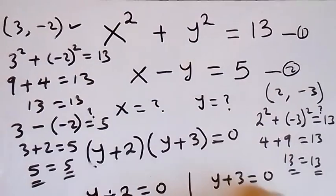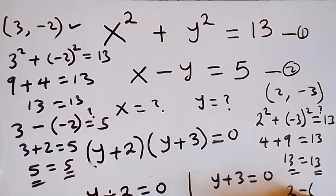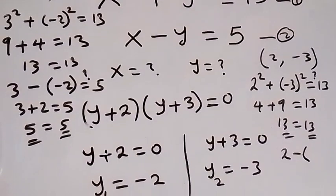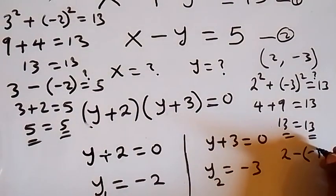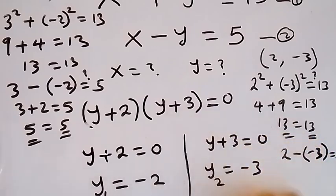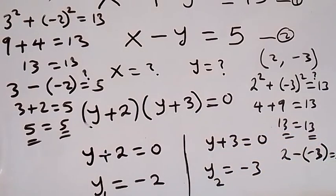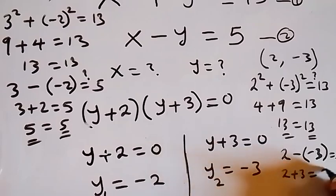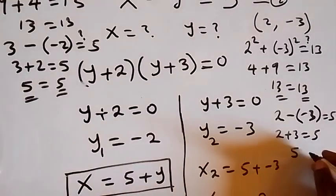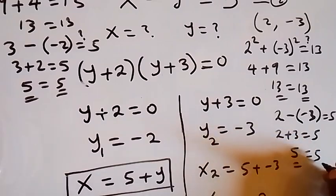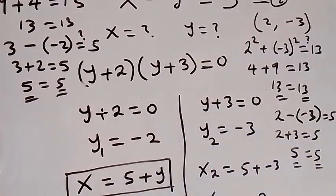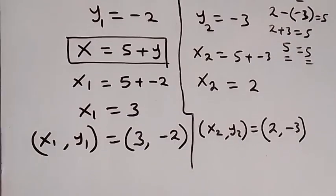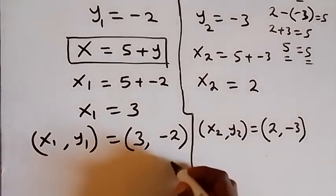Now let's check the second equation as well. x is 2, so we have 2 minus y, and y here is minus 3, so that's 2 minus (minus 3), which is 2 plus 3. Is it equals to 5? Now 2 plus 3 is 5, and 5 equals to 5. Left-hand side equals right-hand side. Hence we conclude that these two sets of solutions satisfy the given problem.